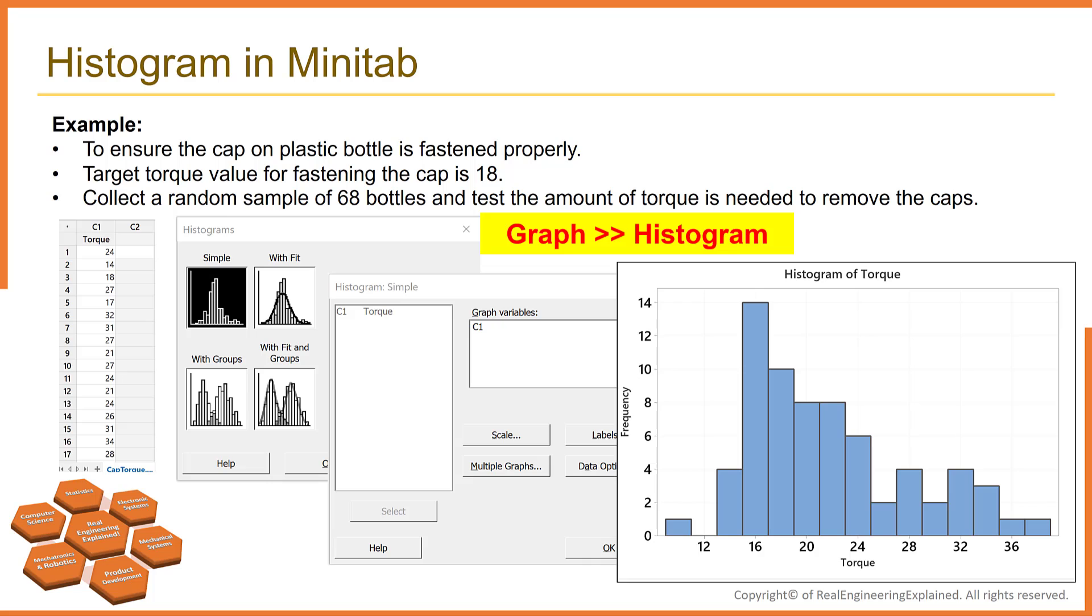As part of initial investigation, we created a histogram of torque data to evaluate the distribution of data. As we can see, most caps were fastened with a torque of 14 to 24. Only one cap was very loose, with a torque of less than 11. However, the distribution is positively skewed, is right skewed. Many caps required a torque of greater than 24, and five caps required a torque of greater than 33, nearly two times the target value, which was 18.